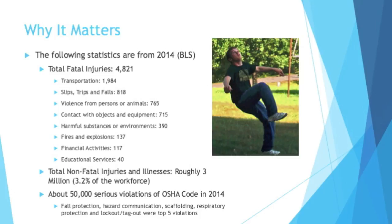You really don't always think about that — slipping, tripping, and falling on things is one of the big killers across multiple industries. Violence from persons or animals accounted for 765 deaths; a big chunk of those are in agriculture, with an animal fighting back or someone being trampled — so they're not all people killing other people. Contact with objects and equipment caused 715 deaths; harmful substances or environments, 390; and fires and explosions, 137. It's interesting that fires and explosions are so much lower than the others — many people imagine flames and explosions as the typical workplace accident, but really, people are tripping, falling, or crashing their car on a work trip. Those are the big killers.